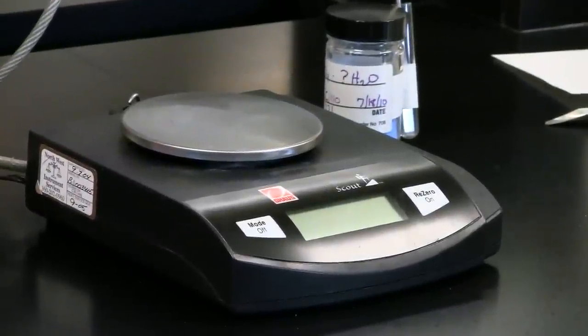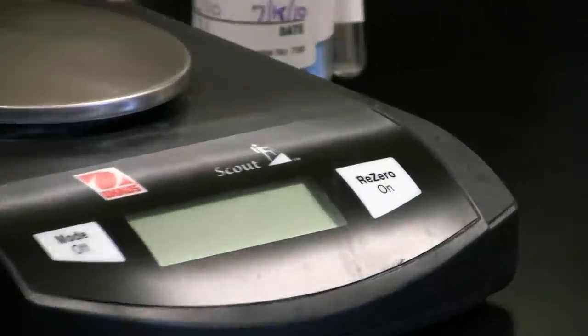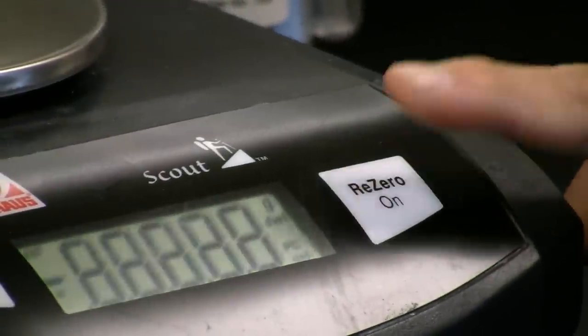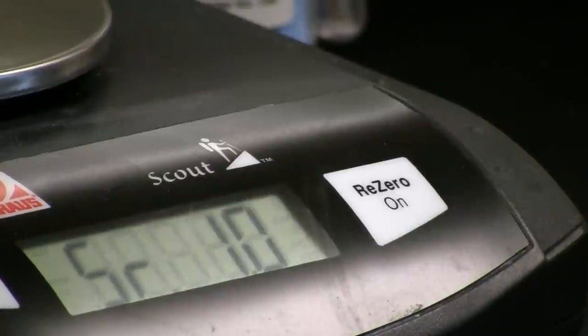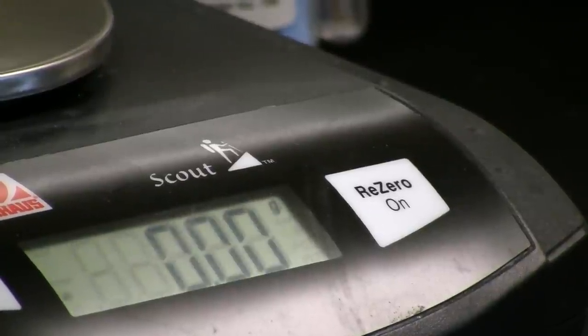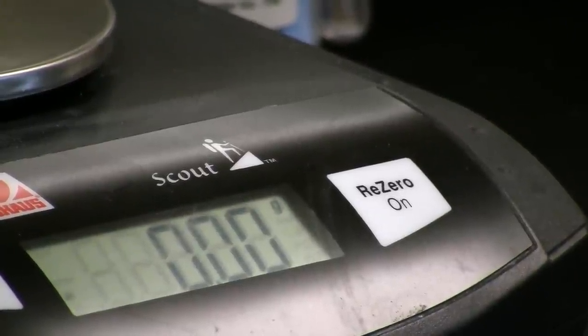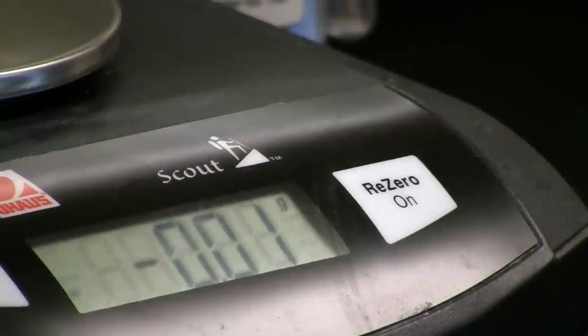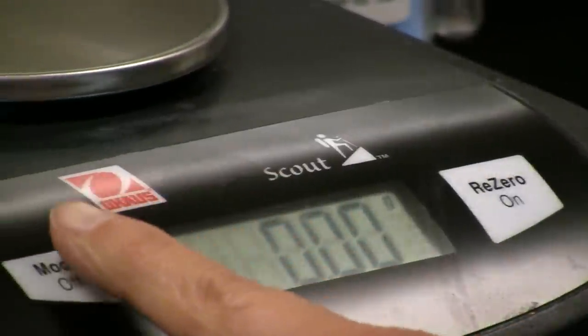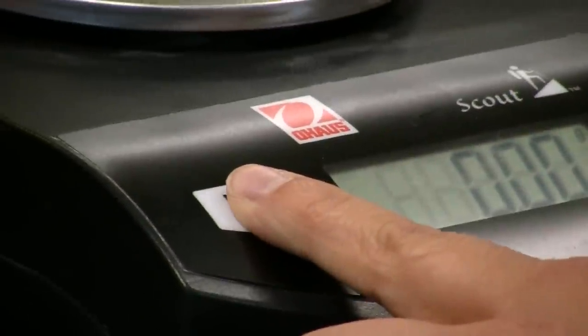Next, ensure that the balance is on and that the correct mode has been chosen. The upper right-hand corner of the display should show G for grams. Use the mode button to cycle through other units back to grams if necessary.